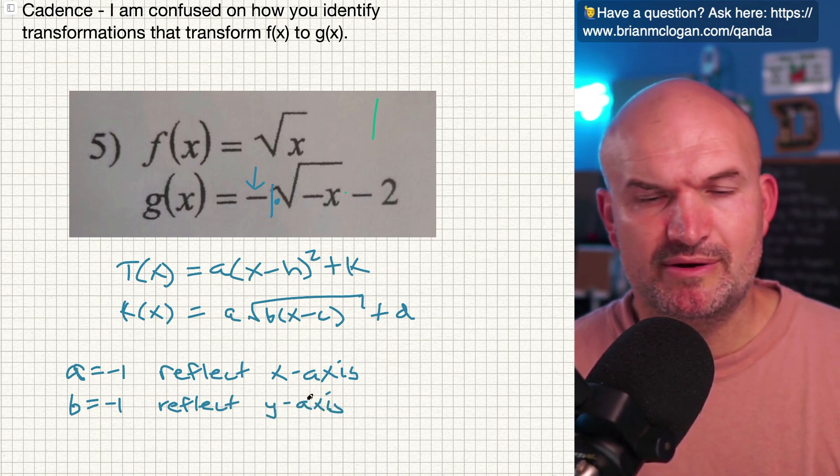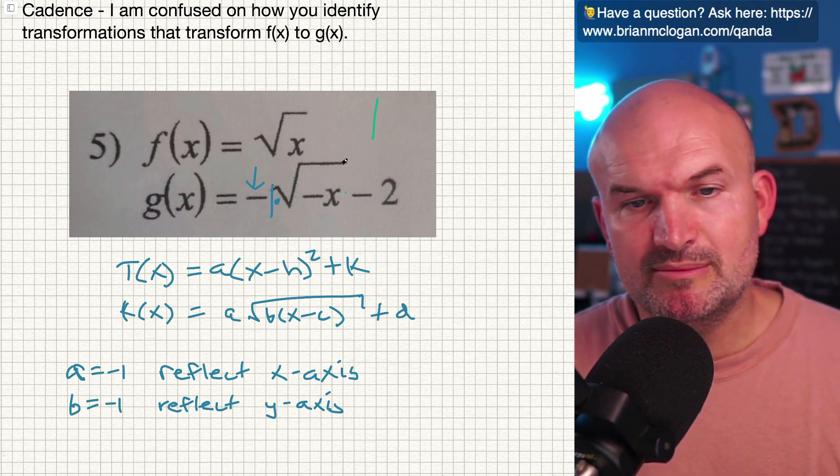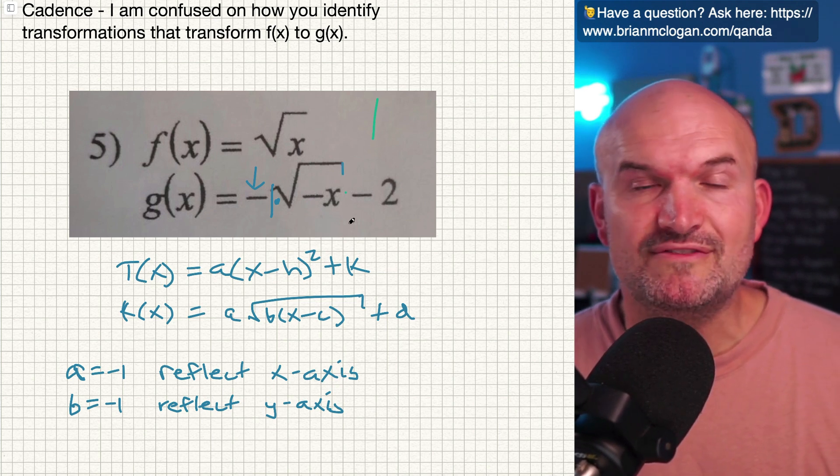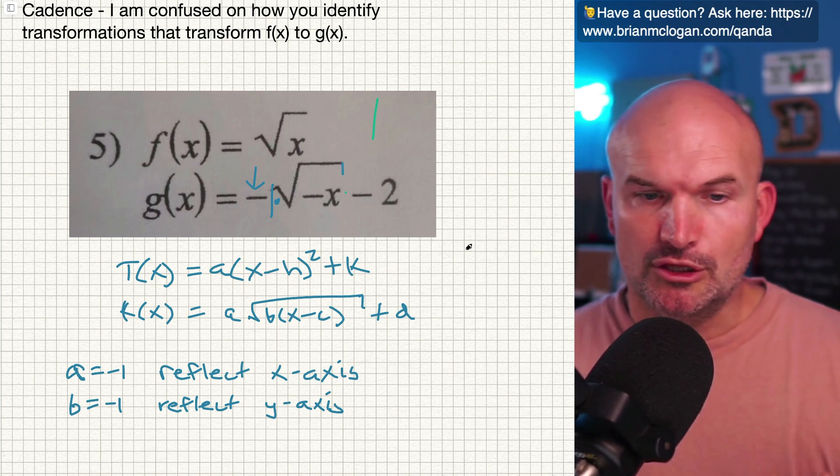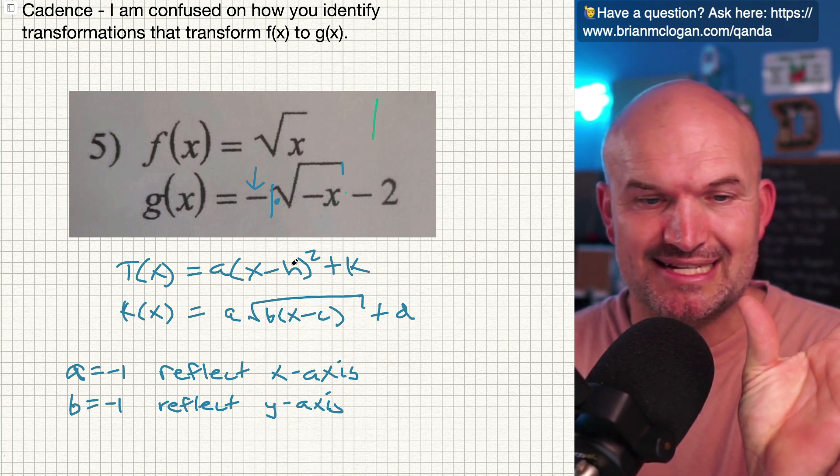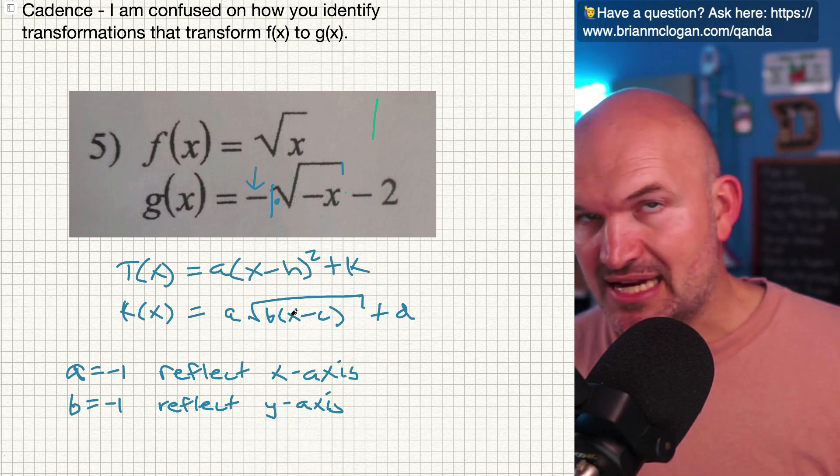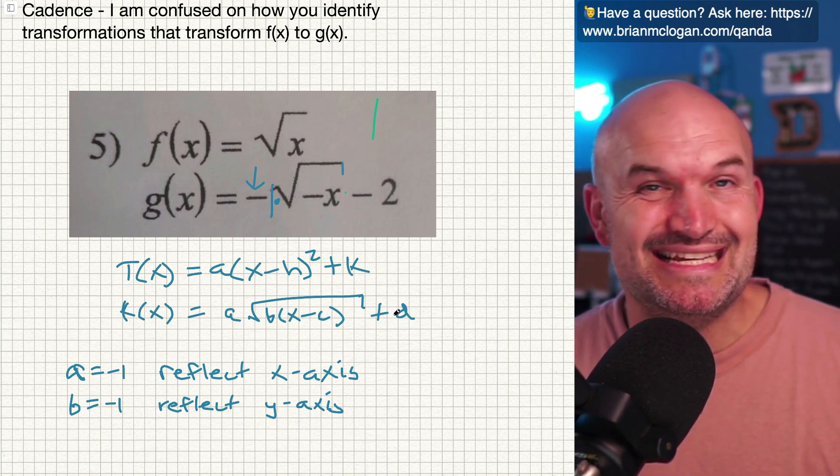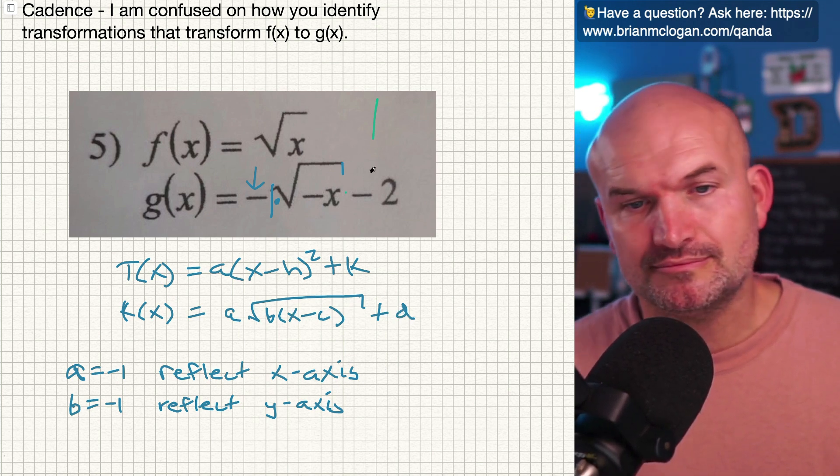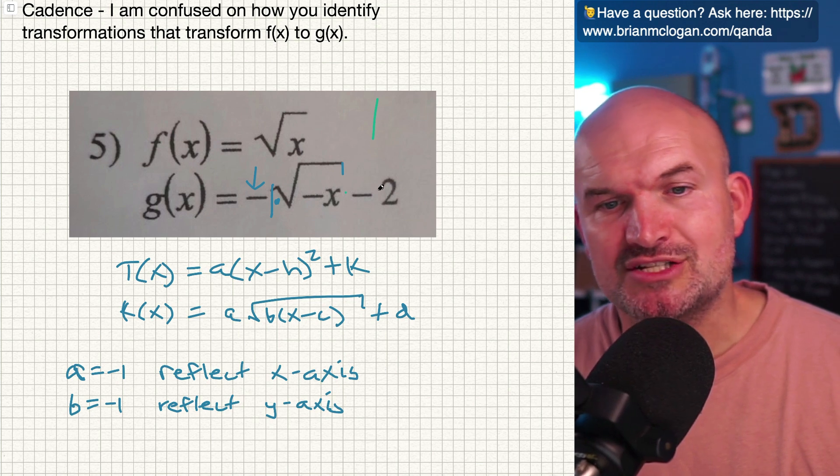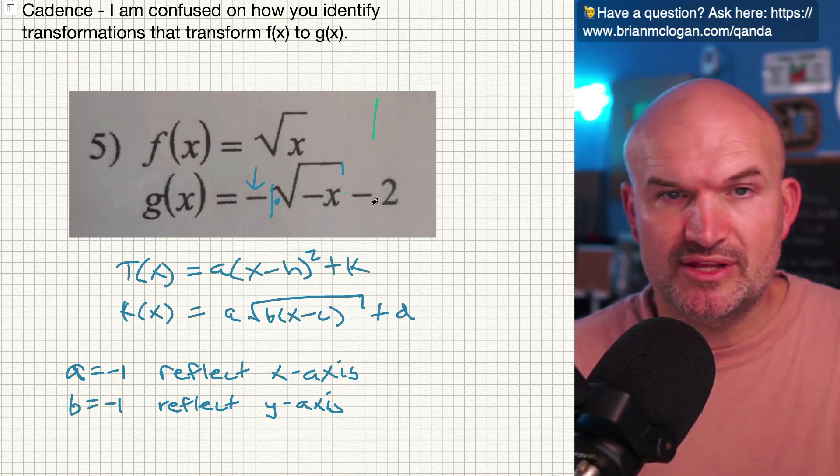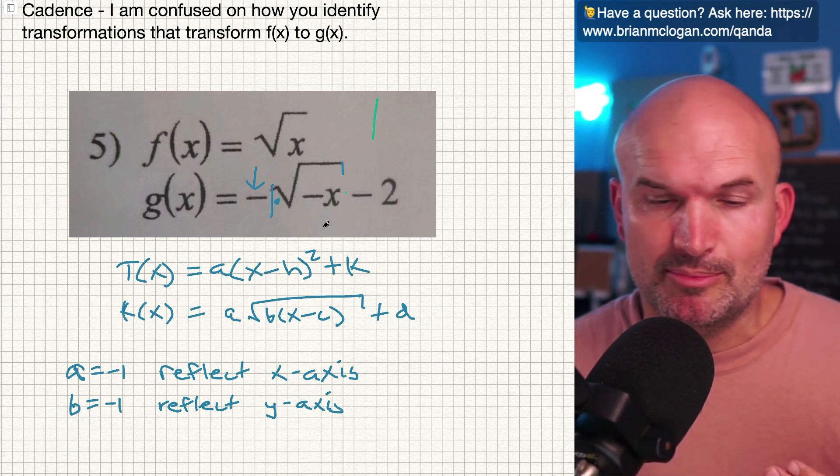And then we need to determine: is two inside the function or is it outside the function? Look at the difference. H is inside the function because it's being squared. K is outside the function, right? C is inside the function. It's under the square root and D is outside the function. Hopefully recognize that minus two is outside the function. So therefore that's going to be a vertical shift up or down.